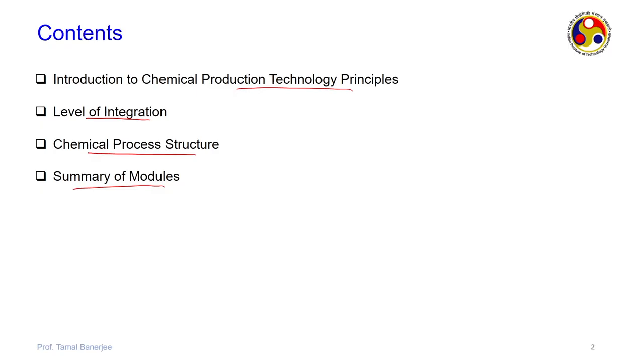Then we have the chemical process structure. It means you have some raw material; you cannot use it directly in a process. You need to do some pre-treatment activities before you start, then apply unit operations — whether it is reaction, distillation, extraction, crystallization — and then separate out the products. These are all part of the chemical process structure. Finally, we will give a short summary of the modules, expanding a bit on what we've seen in the introduction.